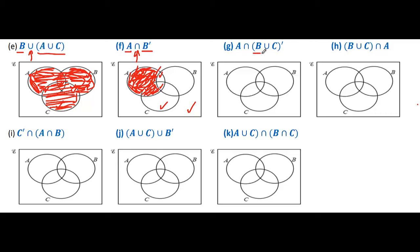Here we have to identify B union C whole complement. B union C whole complement means outside of B union C. First we see where B union C is — this region is B and this region is C. We take the area outside of that region. Only two regions are outside of B and C — this one and this one.